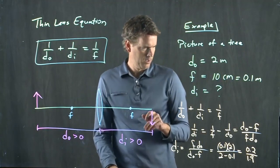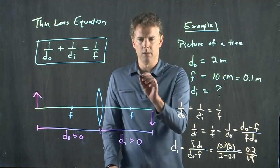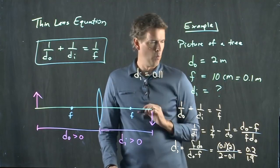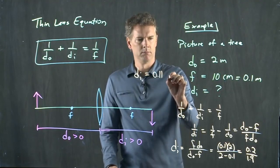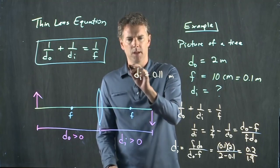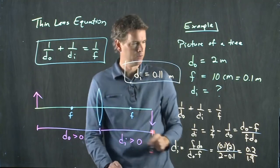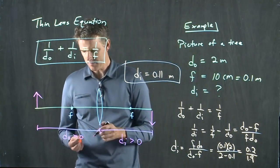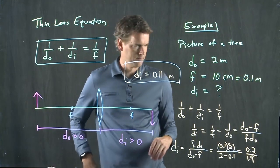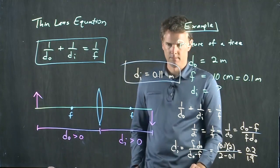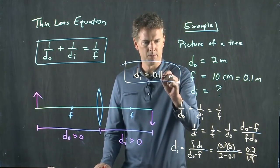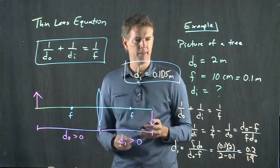Sean, can you punch in those numbers? I'm going to say it is 0.11. That's my guess. Let's see what it turns out to be. 0.2 divided by 1.9. So we'll clear that up, 0.105.